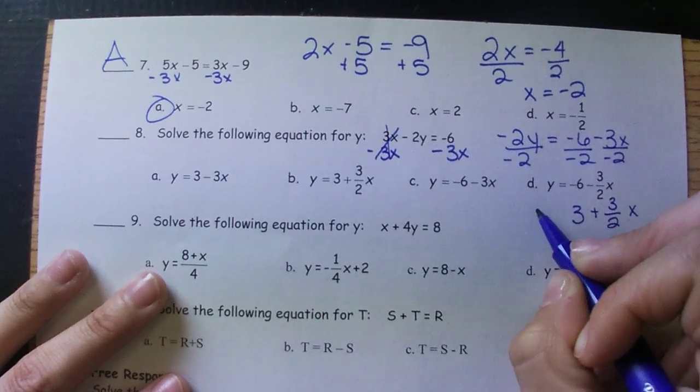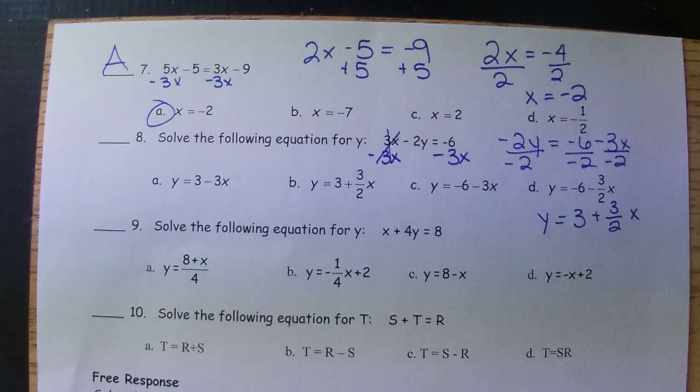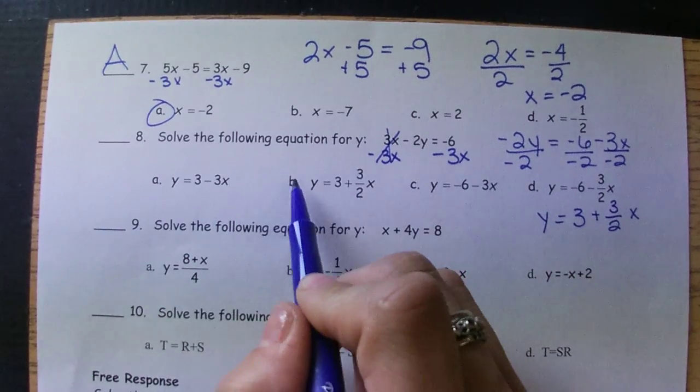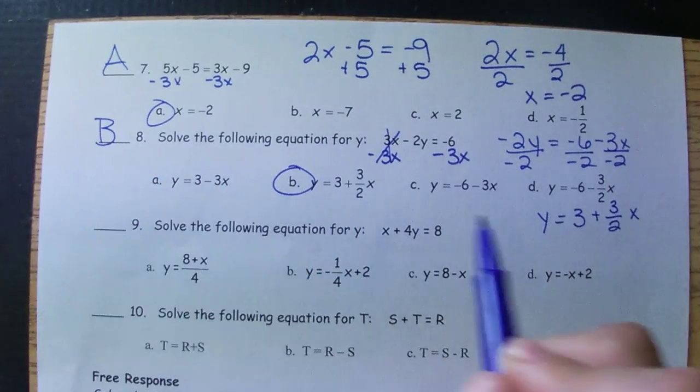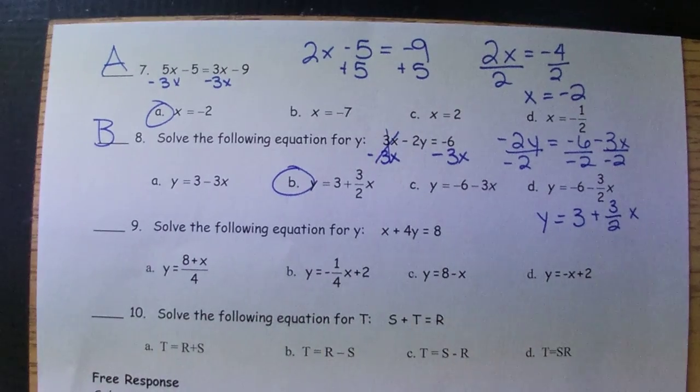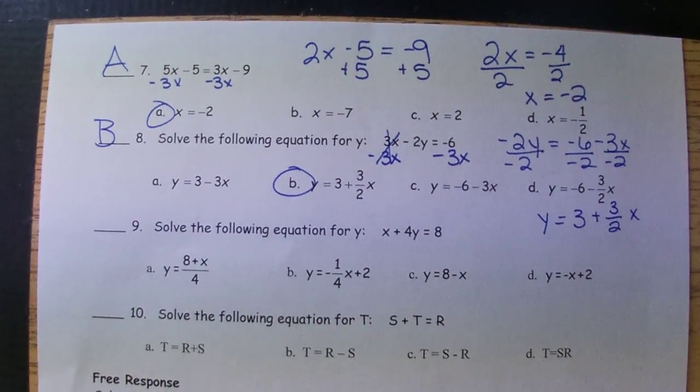If you turn this into a decimal, keep in mind, 1.5 is the same thing as 1 and 1 half, which is the same thing as 3 over 2. So if you had it in a different form, you would need to recognize an equivalent form in the multiple choice.